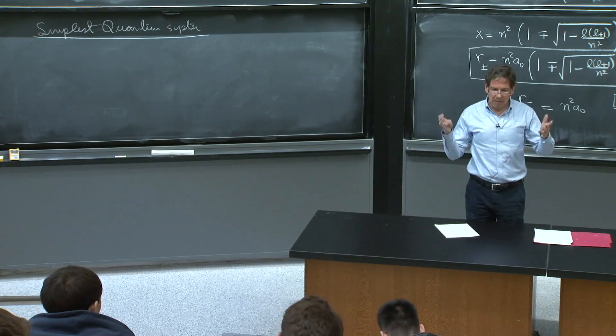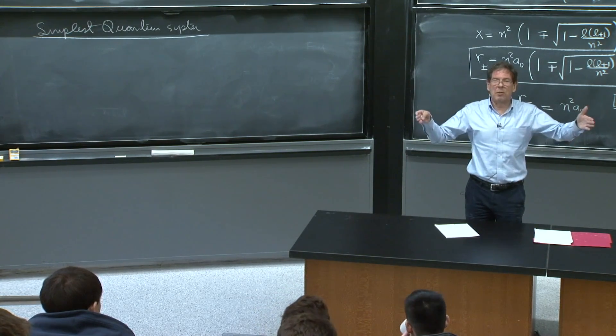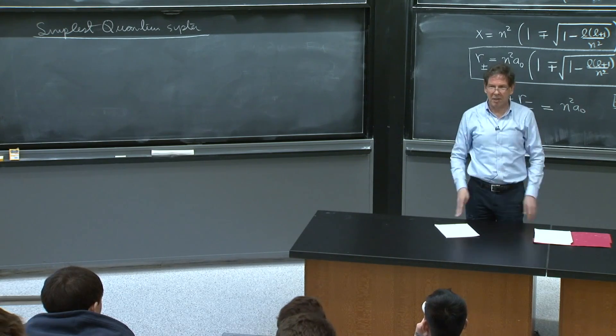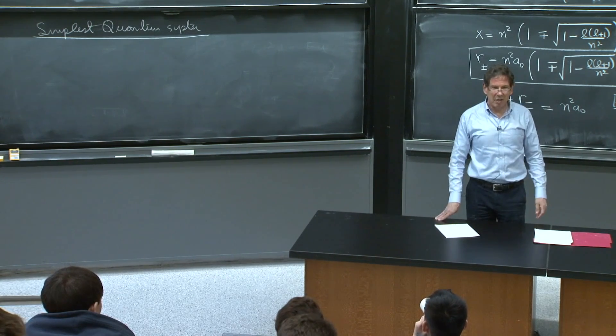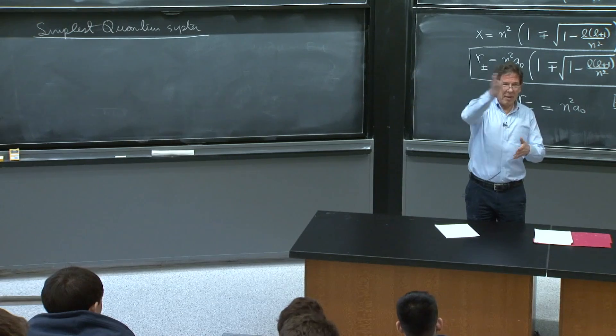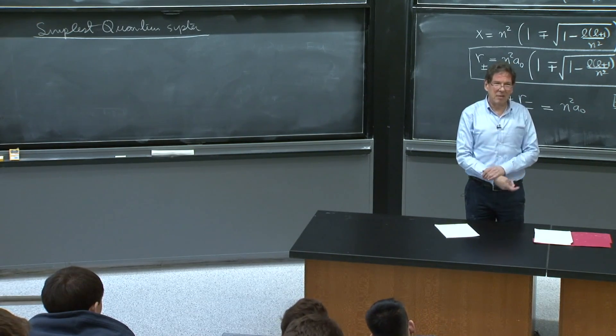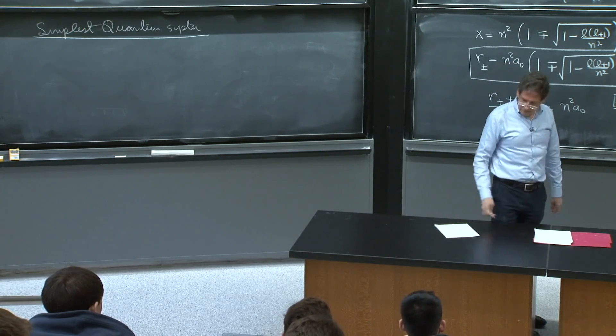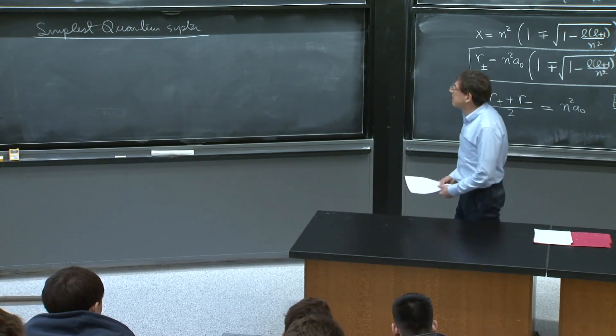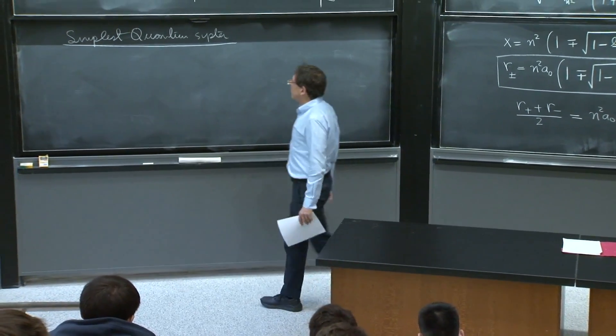Okay, so infinite bound states. Something with one bound state? A delta function potential has just one bound state. But it has infinitely many scattering states. It's still complicated. So what could be simpler?